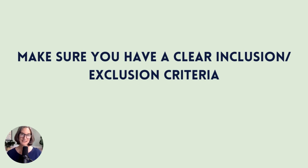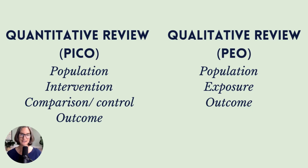Your first step is to have a really clear inclusion and exclusion criteria. This is going to be developed based on your PICO or your PO, which are great frameworks to help you structure your inclusion criteria. For a quantitative review, your inclusion criteria would be around your population, intervention, possibly comparison or control, and your outcome. For a qualitative review, it will be around the population, the exposure, and the outcome.